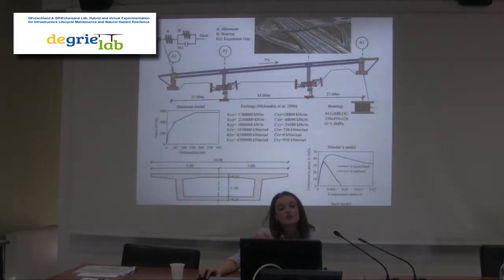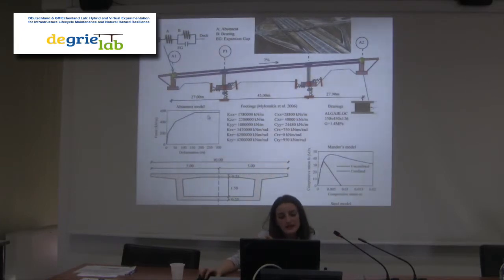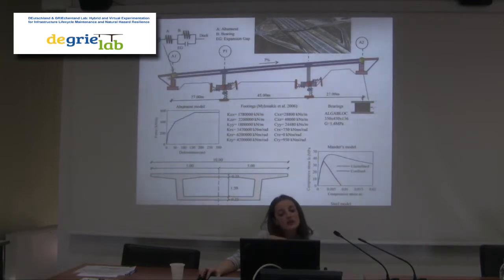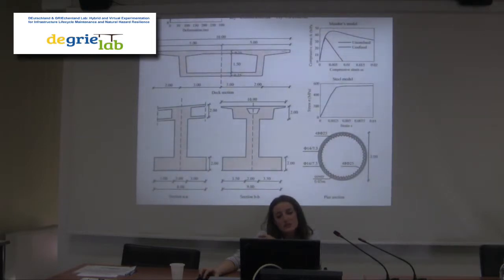For the purposes of the hybrid test, we examined a simpler bridge: an overpass with a total length of 99 meters, an inner span of 45 meters, and two outer spans of 27 meters each. The piers are monolithically connected to the deck, and the deck is supported on C-type abutments with two elastic bearings at each end. The deck is a concrete box girder section 10 meters wide, and the piers are solid circular sections with a diameter of 2 meters.